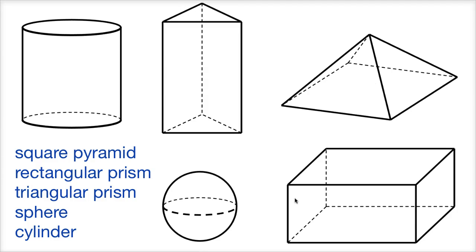So I have five three-dimensional shapes over here, and I also have five names for them. And what I want you to do is pause this video and think about which of these shapes is a square pyramid, which of these is a rectangular prism, which one is a triangular prism, which one is a sphere, and which one is a cylinder.